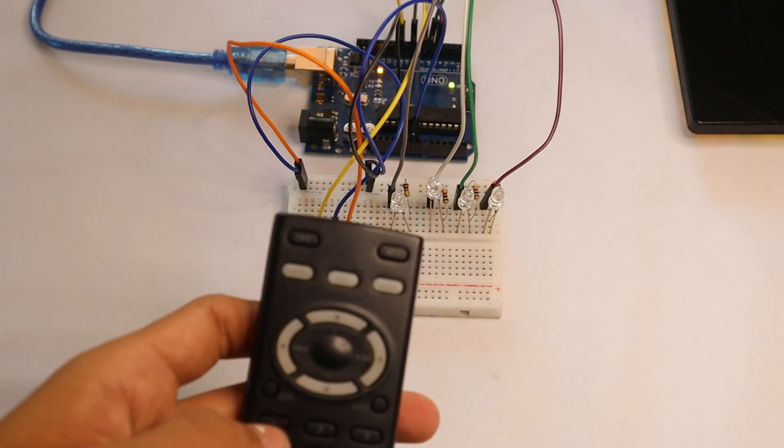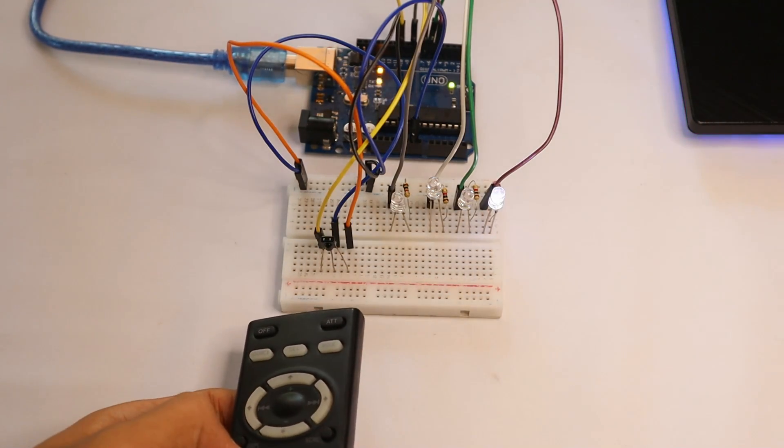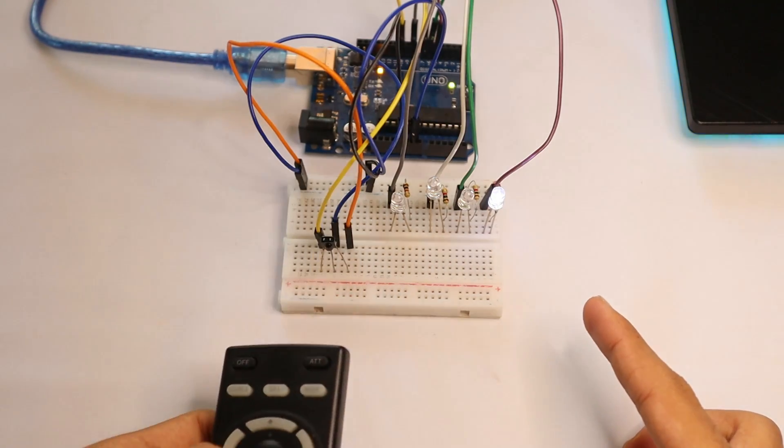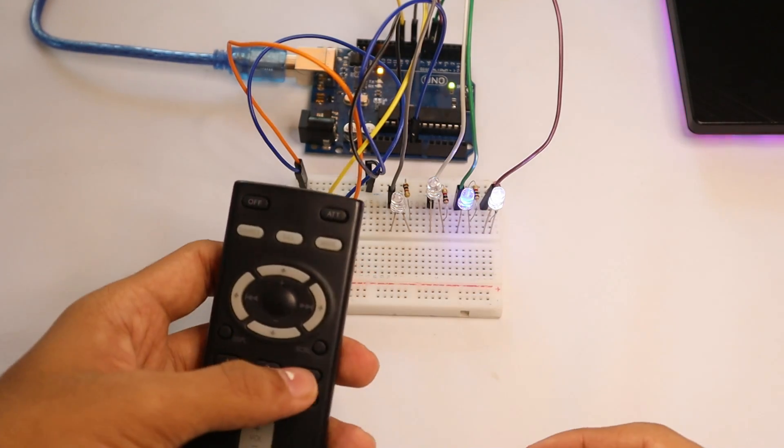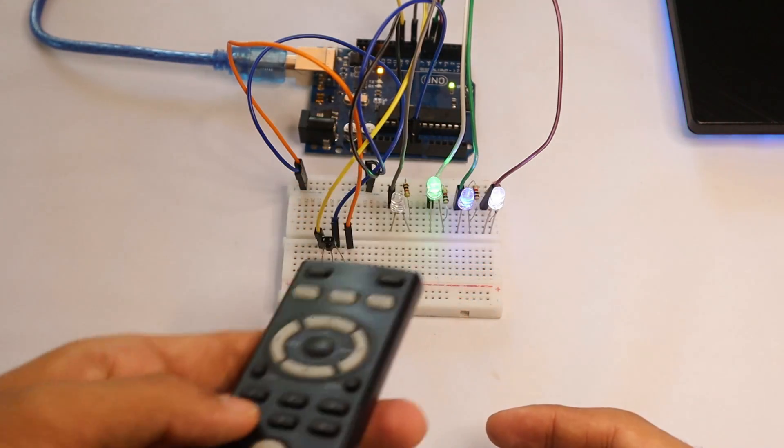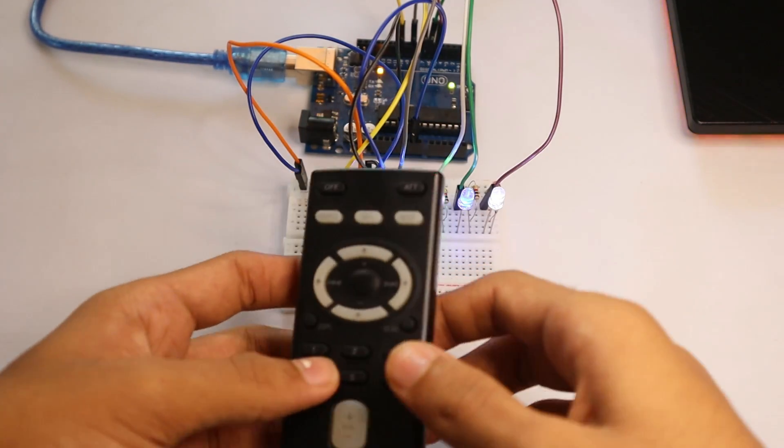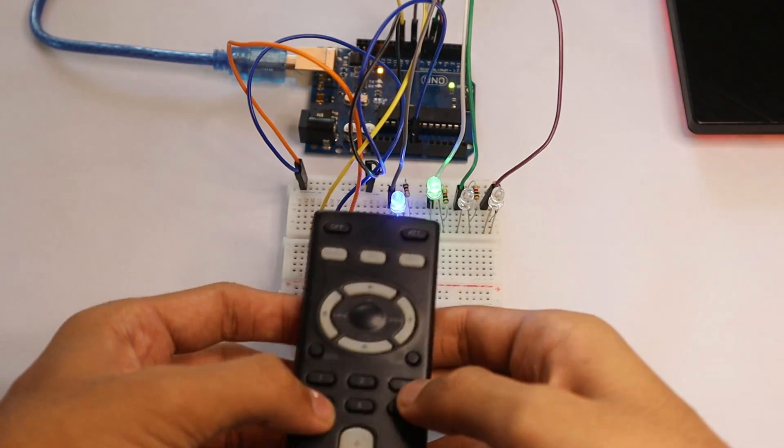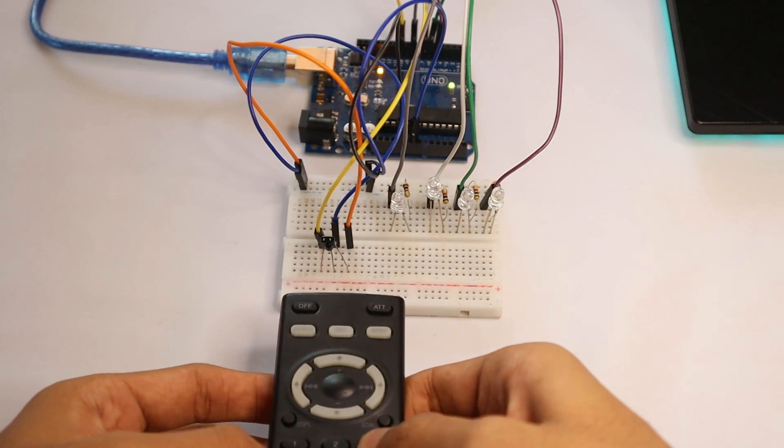Now let's press 1, that's the first LED - see the first LED lights up. Now let's try 2 - second. Now let's try 3rd - 3rd LED. Now let's try 4th LED - and 4th LED. You can also turn off the second LED and 1st LED or 4th LED or 3rd LED.